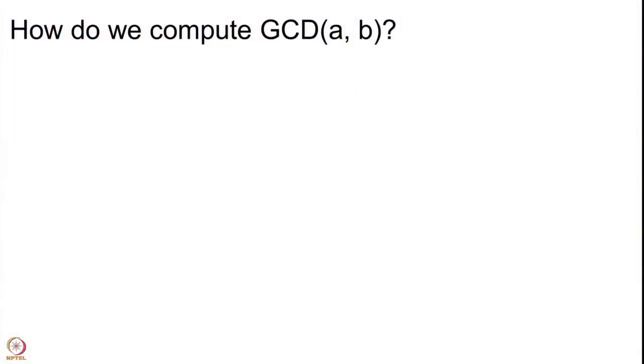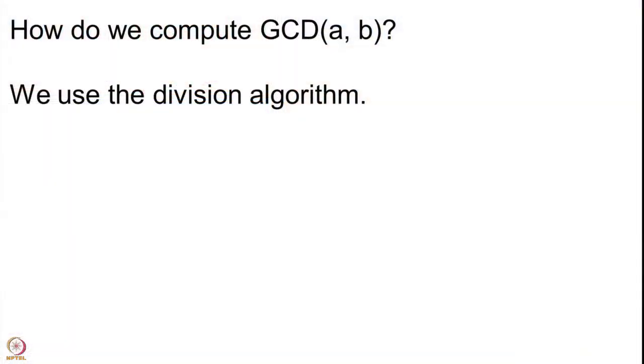Once we define any such thing, the question is how do you compute it? It is not so easy at all — how do you compute the GCD of any two given numbers? We are going to use Euclid's division algorithm. Division algorithm says that whenever you have two natural numbers A and B, you can write A as BQ + R, where Q is the quotient and R is the remainder. Applying the division algorithm is our first step of computing GCD(A,B).